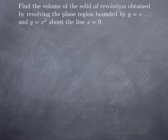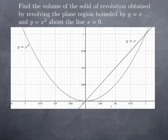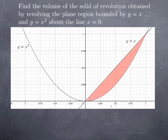Moving on to the next example. We want to find the volume of the solid of revolution obtained by revolving the plane region bounded by y equals x and y equals x squared about the line x equals 0. As usual, we start with a sketch of the region to be revolved. Here are the curves y equals x squared and y equals x, and you see that the region bounded by these two curves is the one here in red. We want to rotate it about the y-axis, x equals 0.